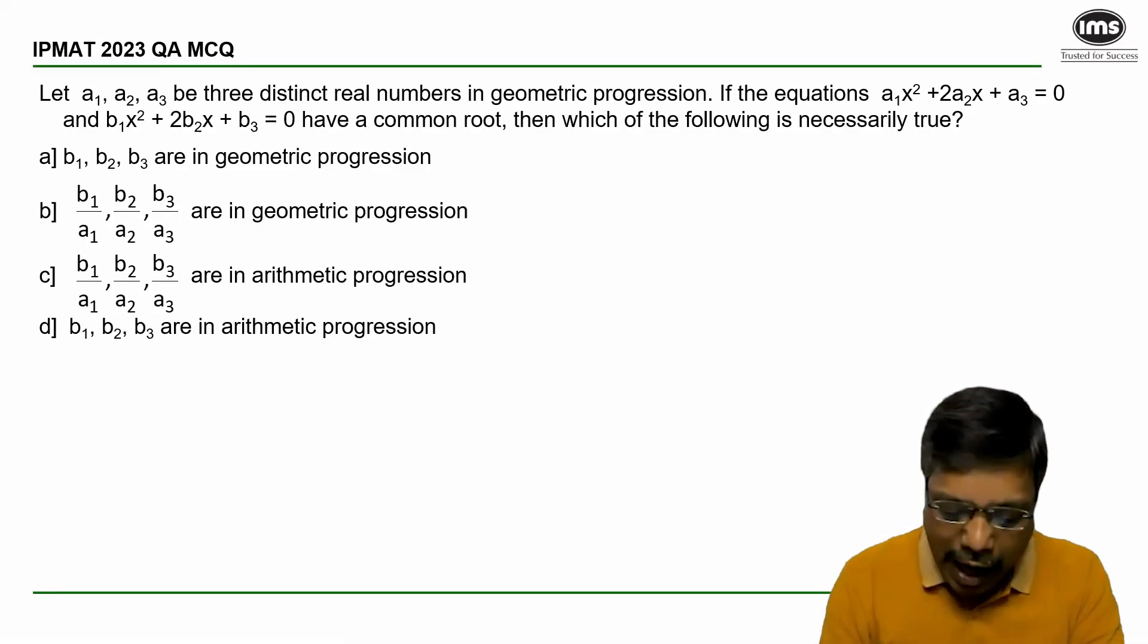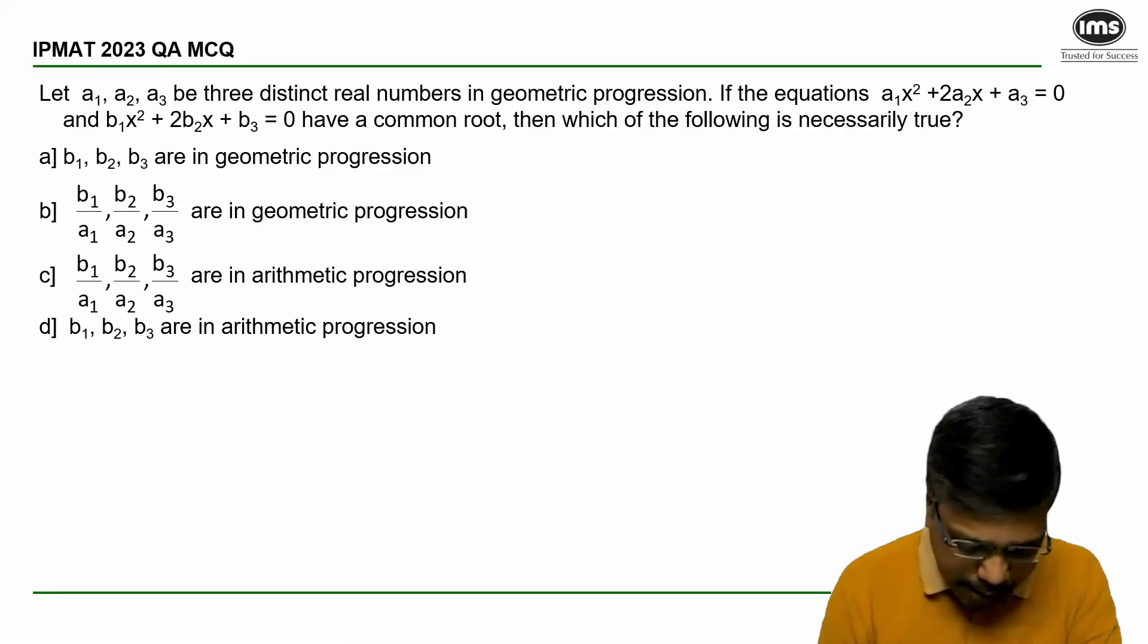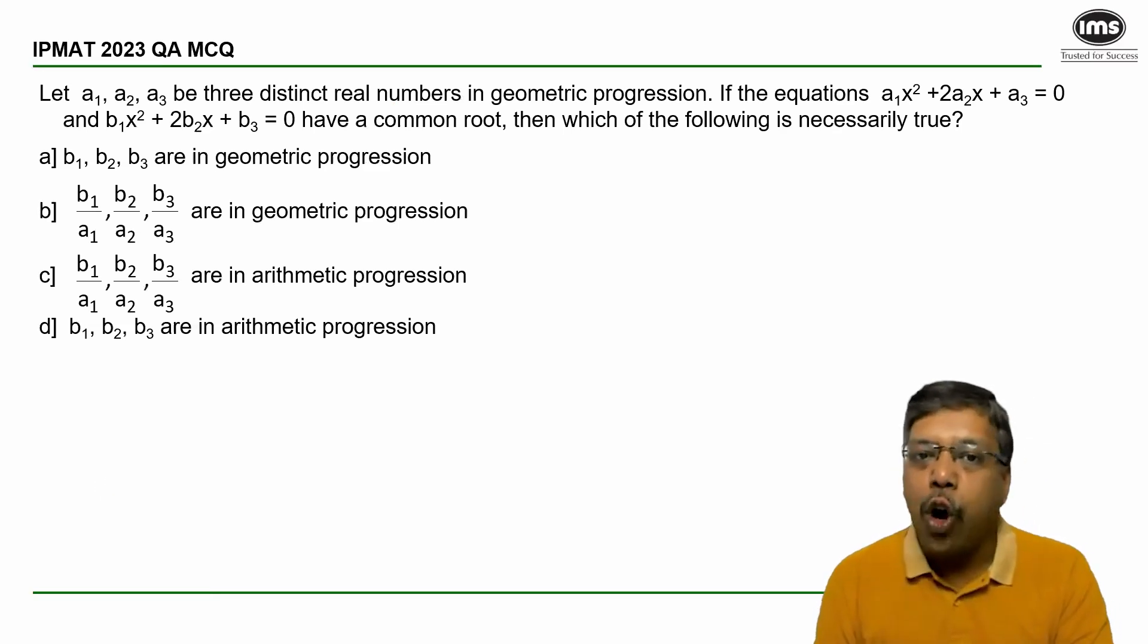A1, A2, A3 are three distinct numbers in geometric progression. The given equations have a common root.